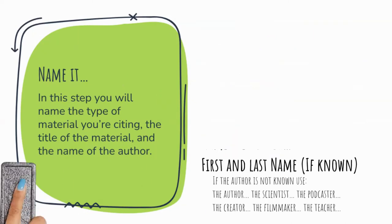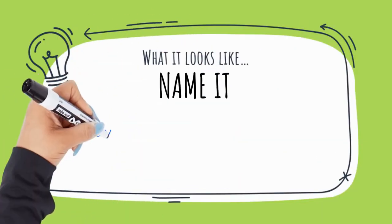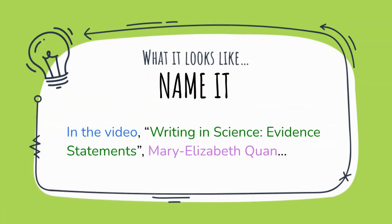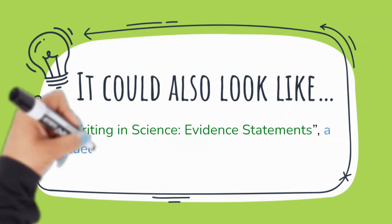Here is one example of the name it part of the final evidence statement. Notice that when I'm working on this part of the sentence, as a teacher, I can highlight where the punctuation goes because I can teach it in isolation and in the context of citing the source.